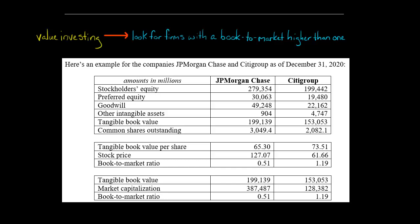To calculate the book-to-market ratio for JPMorgan Chase, you can take the book value per share and divide it by the market value per share — the stock price — which gives you 0.51. Alternatively, you could take the tangible book value and divide it by the market cap, and that would also give you a book-to-market ratio of 0.51.